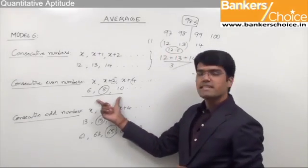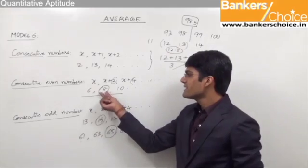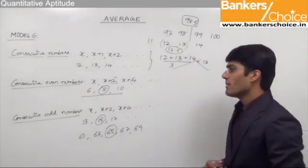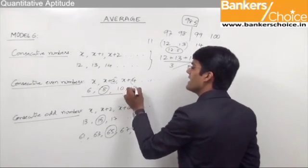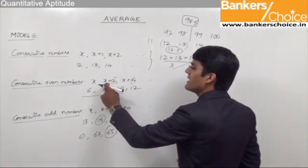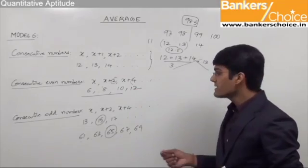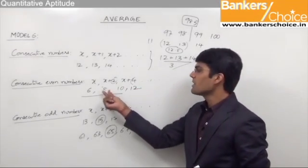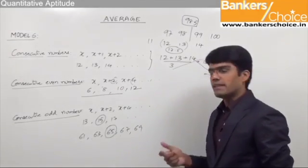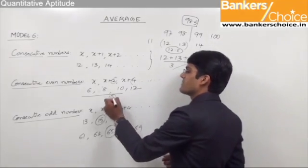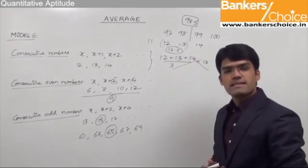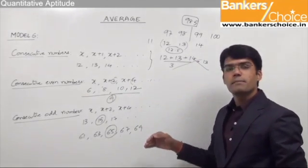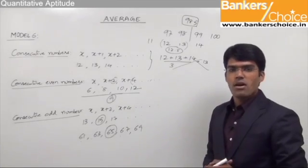Likewise for consecutive even numbers: we have 6, 8 and 10 where the average was 8, the middle number. But if we have 6, 8, 10 and 12 then the average cannot be taken as 8. In this case the average will be the number which comes exactly between the two middle numbers 8 and 10, and that number is nothing but 9. So the average of 6, 8, 10 and 12 is 9. The same concept applies for consecutive odd numbers as well.